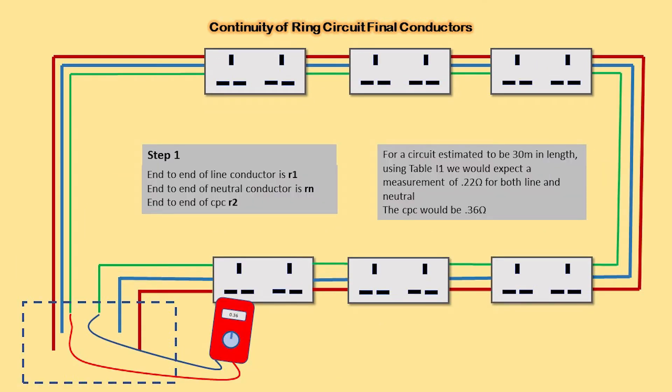Step one: we measure the end-to-end of each conductor. Line is represented as lowercase r1, neutral as lowercase rn, and the CPC as lowercase r2. These are not to be confused with the uppercase R1+R2, which will be the figure we enter onto the certificate. For example, in a circuit 30 meters in length, using Table I1, we would expect a measurement of 0.22 ohms for both line and neutral. The CPC would be 0.36 ohms.